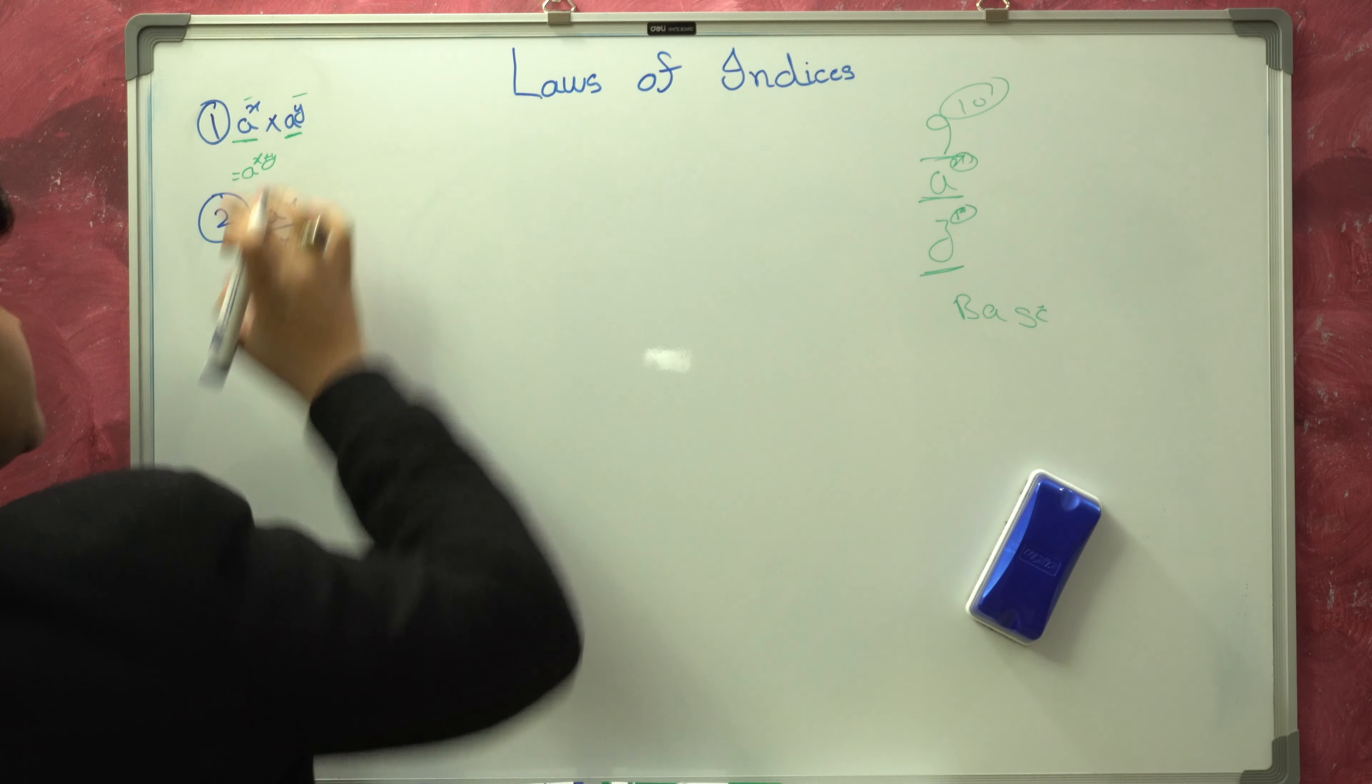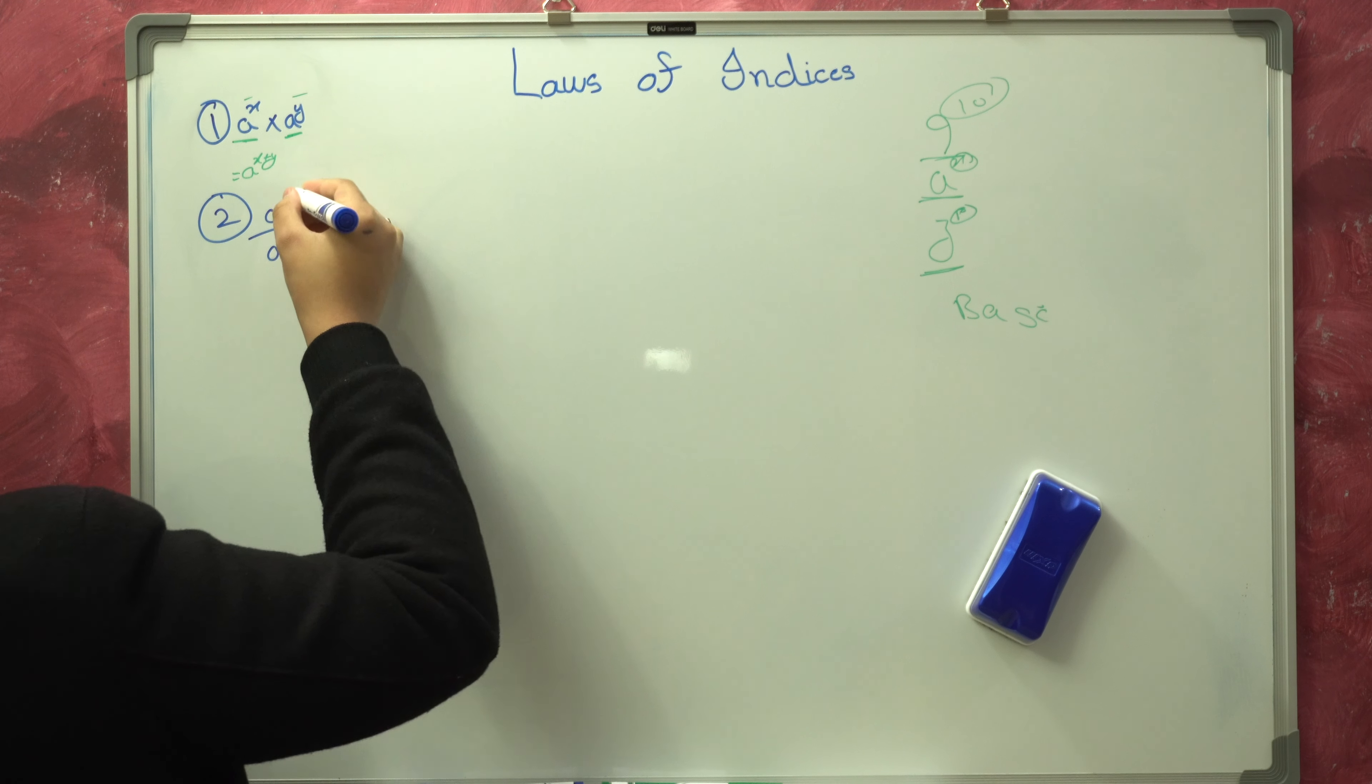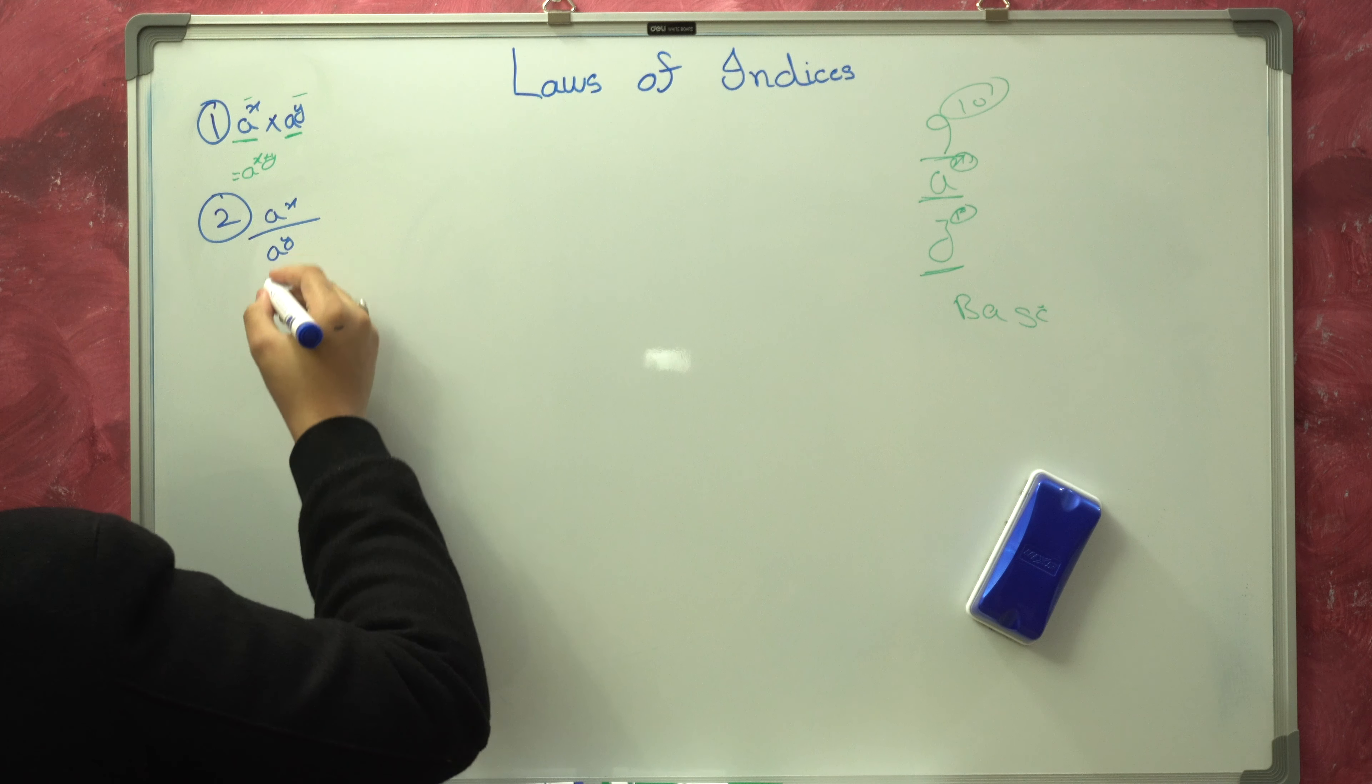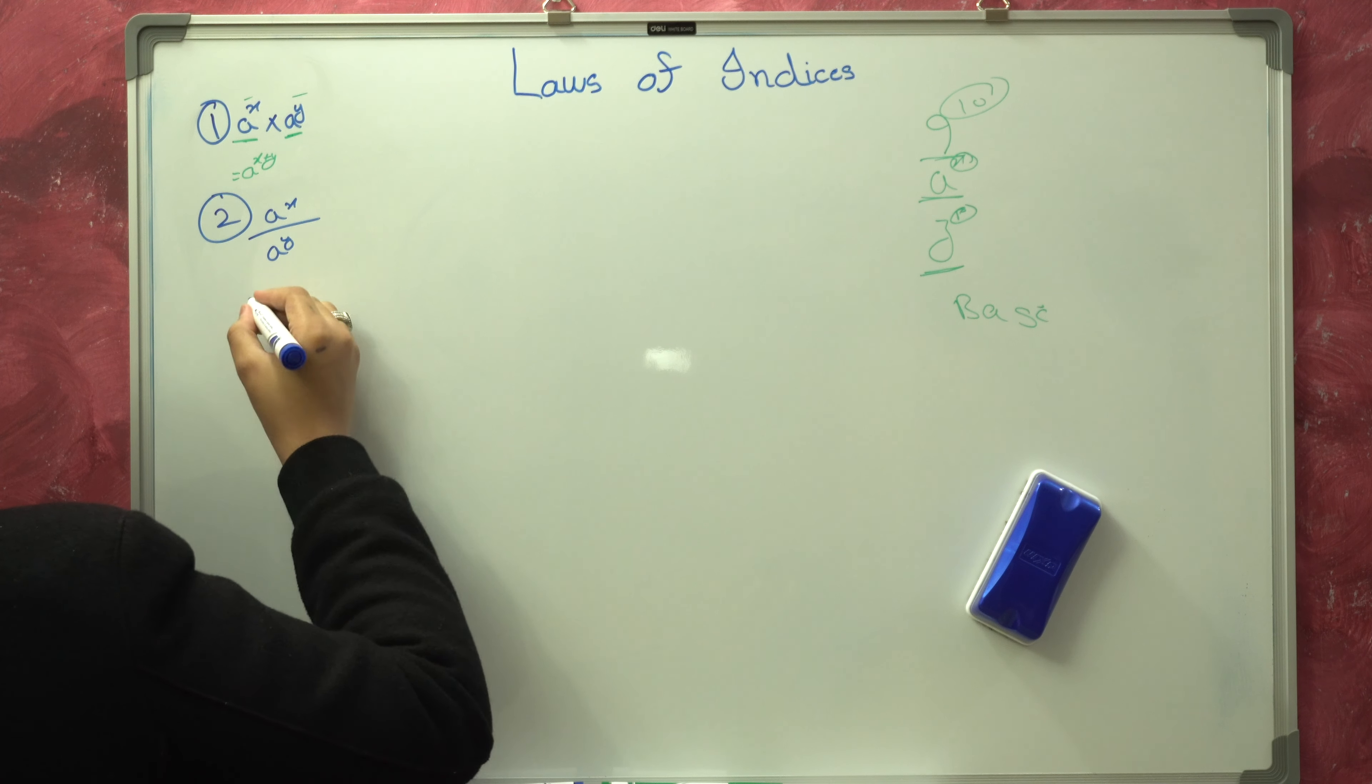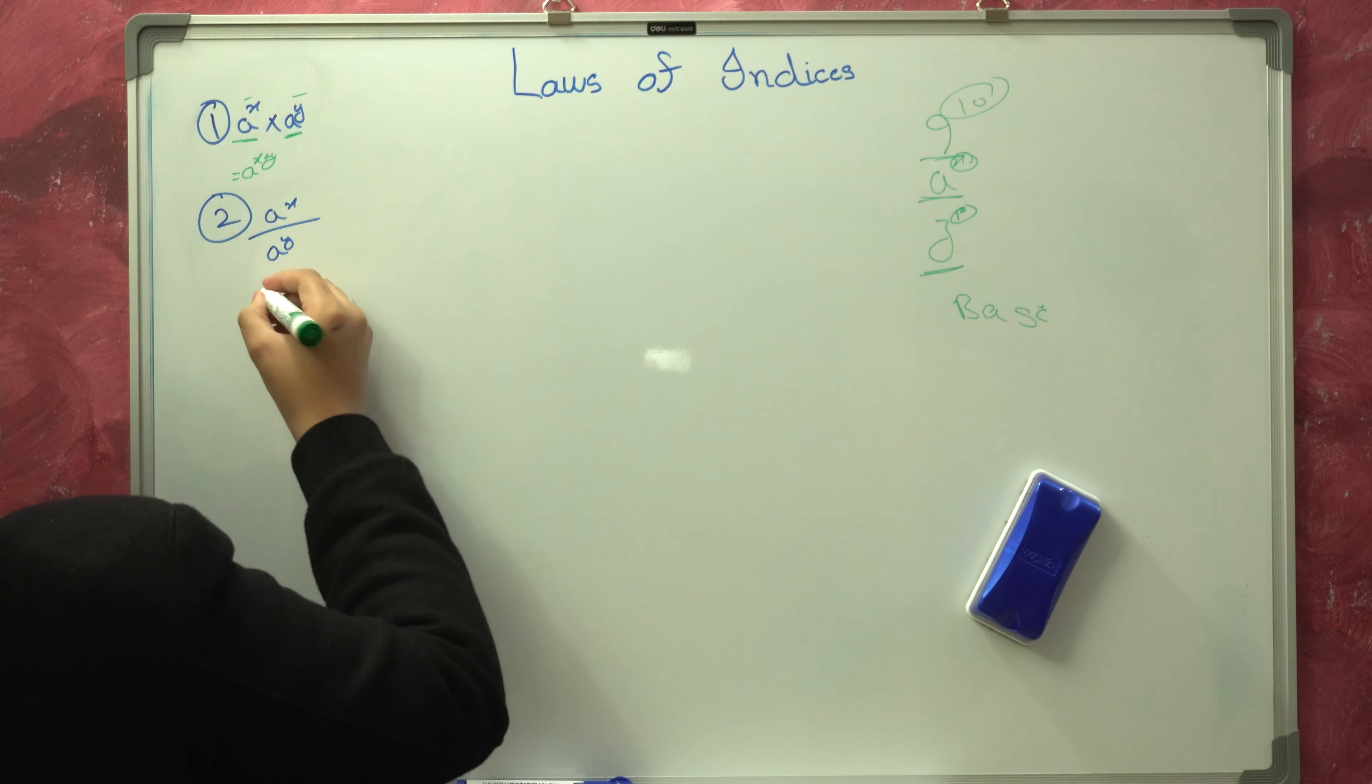If there are two same bases, the base in the denominator will go up or the base in the numerator will go down in the denominator. Over here, we will take the base in the denominator and the numerator, and it will be A to the X minus Y.